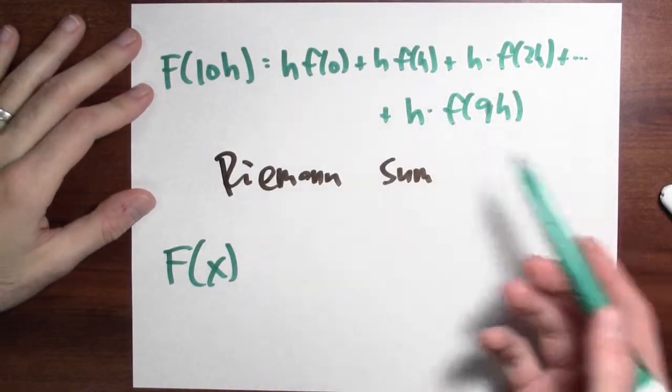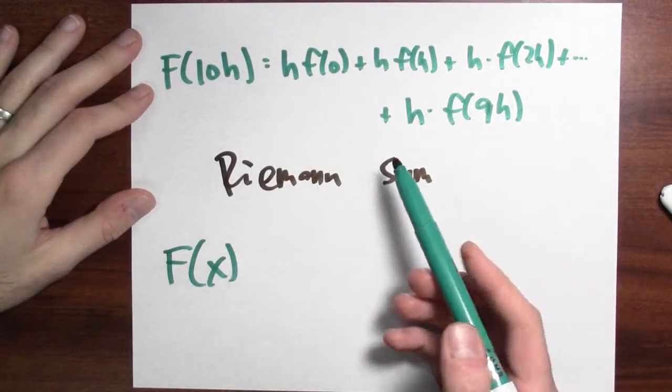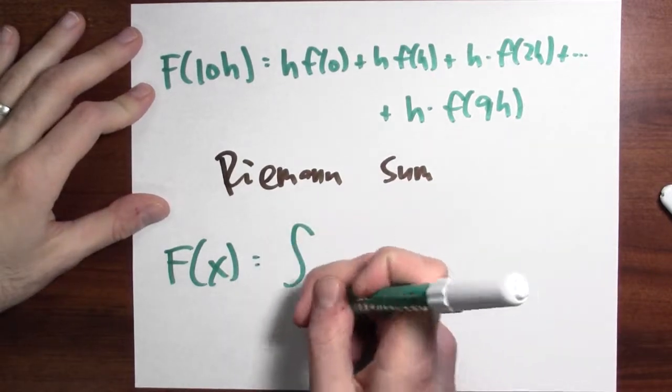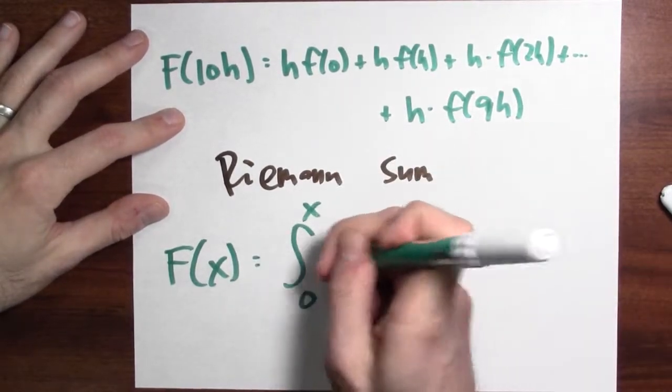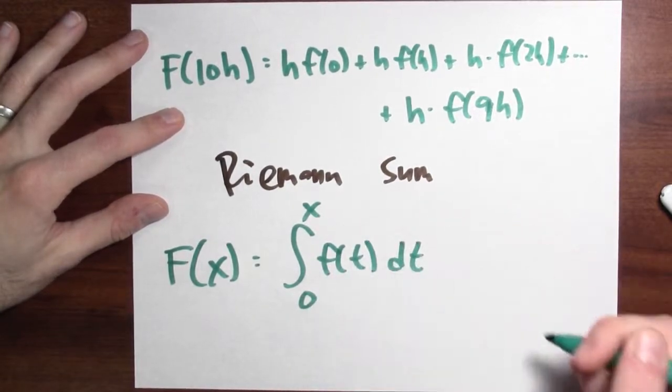And what would I be calculating? I'd just be calculating the integral from 0 to x of my function, right? Of little f of t dt.